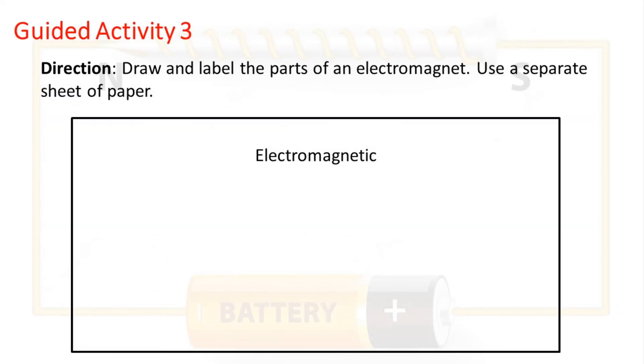Guided Activity 3. Draw and label the parts of an electromagnet. Use a separate sheet of paper.